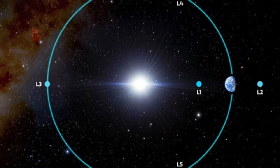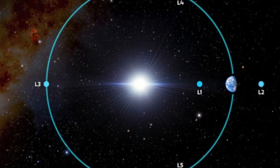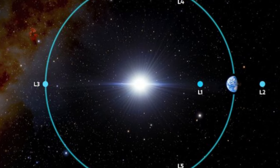2020 XL5 might not be it, however. Its orbit takes it nearly as far out as Mars and crosses Venus' orbital path.